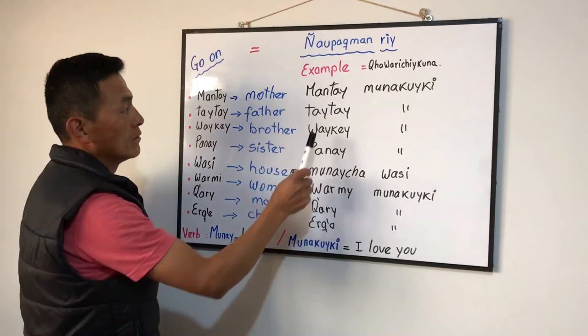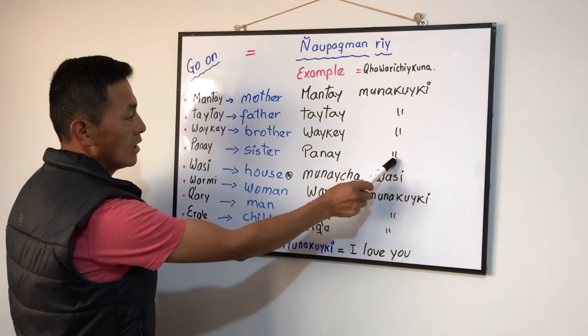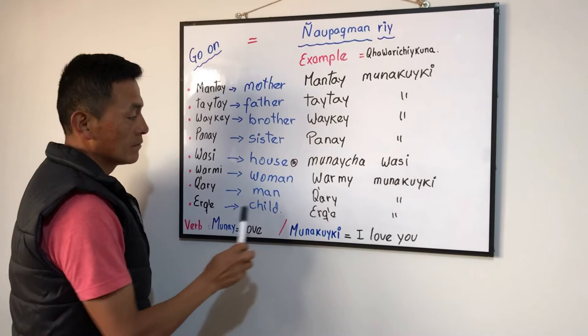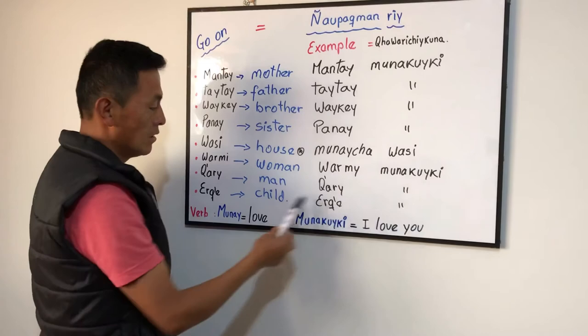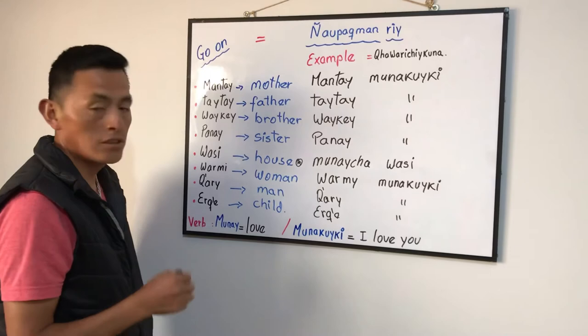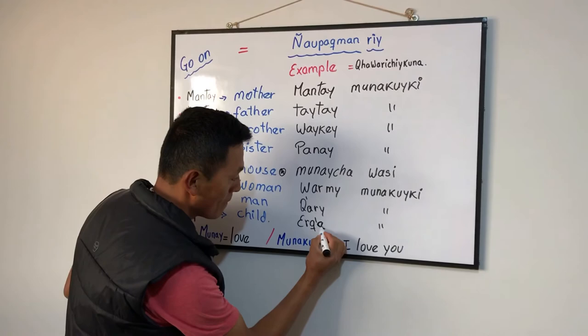Mom, I love you. Brother, I love you. Sister, I love you. Beautiful house — it means Munai Chawasi. Girl, woman, I love you. Man, I love you. Child, I love you. Actually, Erke — child — it's for both genders.